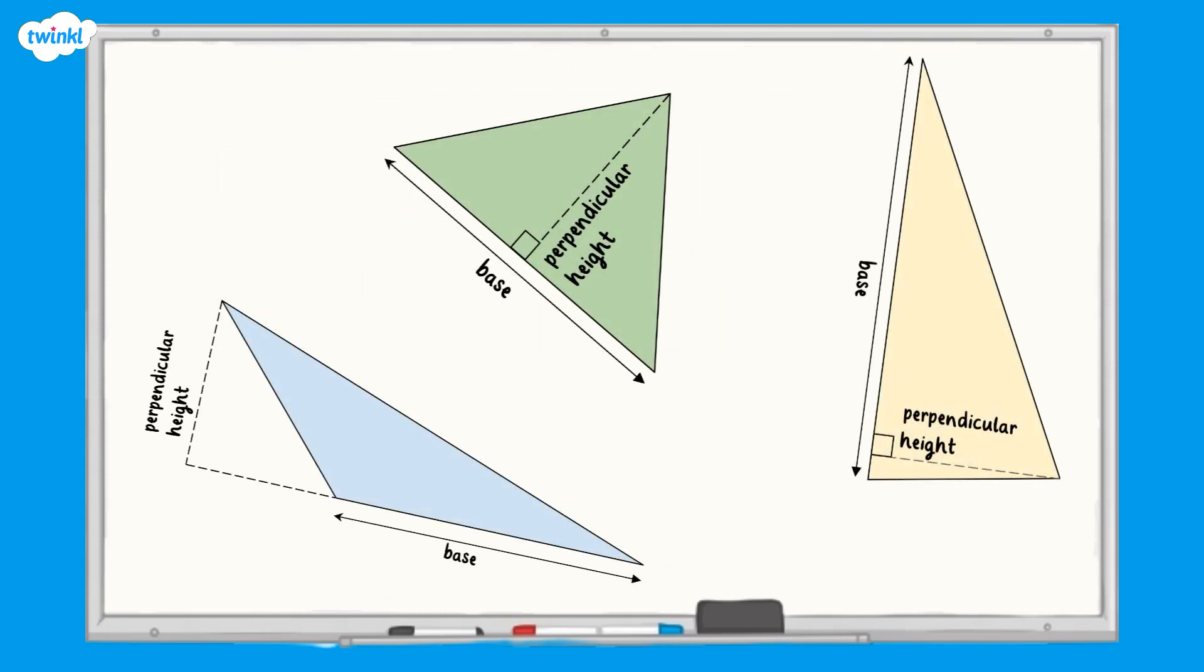One important thing to remember is that the base of a triangle isn't always at the bottom. The key thing to check is that the base and perpendicular height must meet to make a right angle. Here are some examples of different triangles with the bases and perpendicular heights labelled.